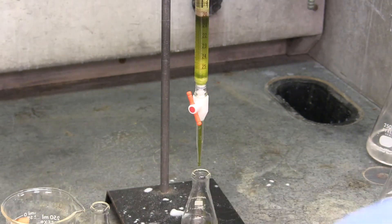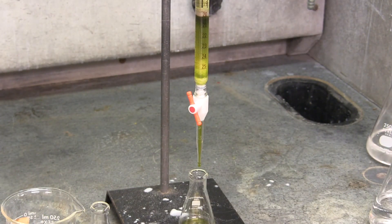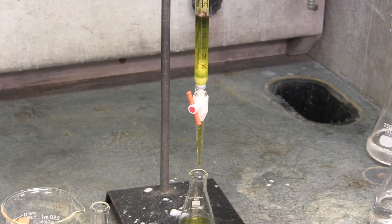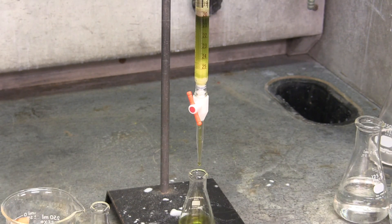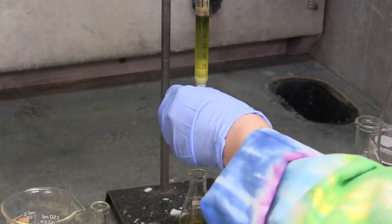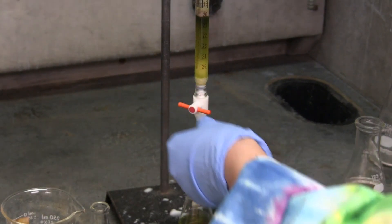The last fraction collected in a new Erlenmeyer flask is the lighter green band. Once this last band is collected, the column is stopped by using the stopcock.